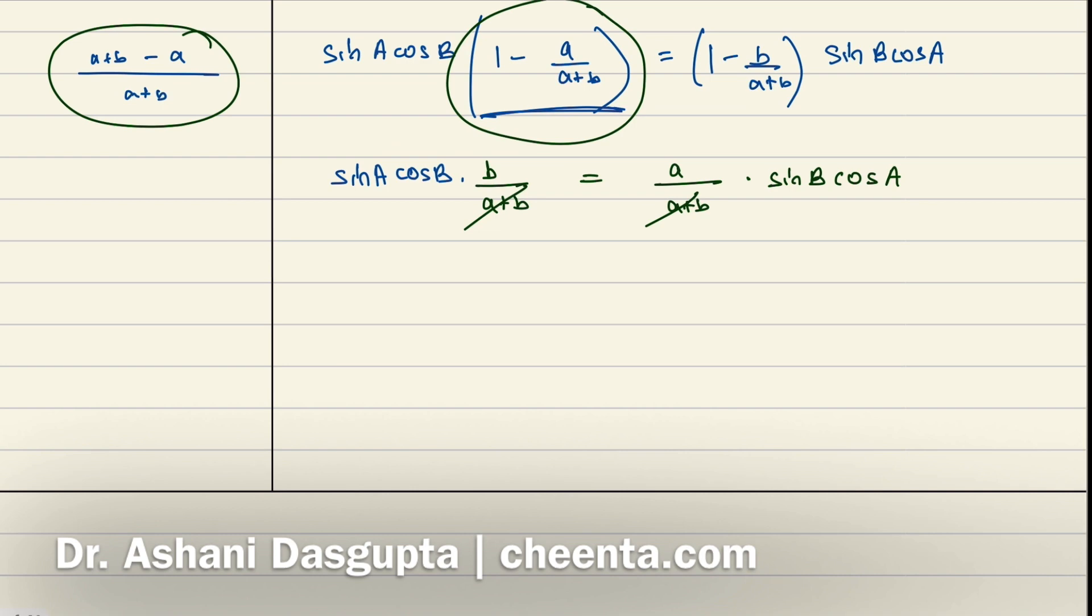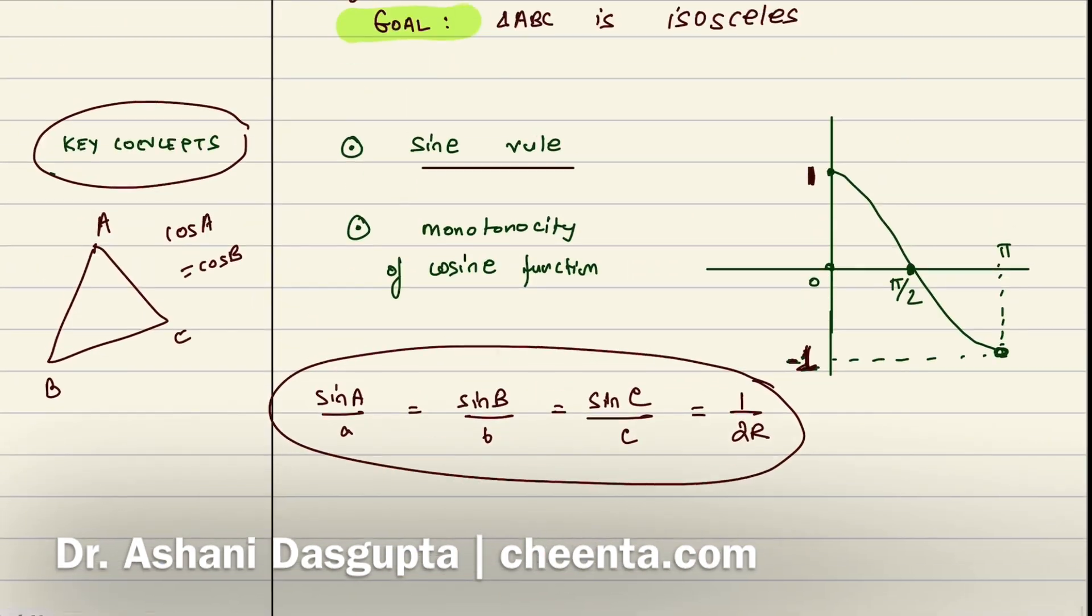Now see, sinA/a is just 1/(2R) because of the sine rule that we have described earlier. So this is 1/(2R) × cosB equals 1/(2R) × cosA. So we cancel out 2R and 2R. Finally we have cosB equals cosA.